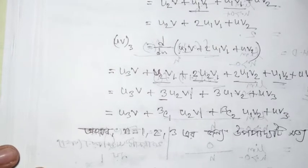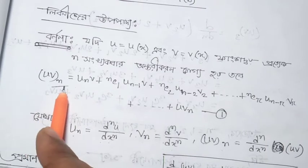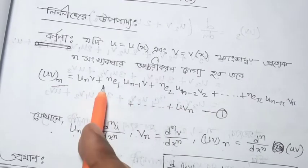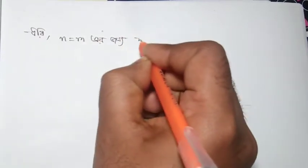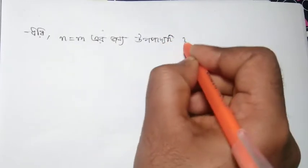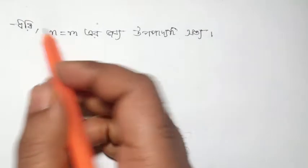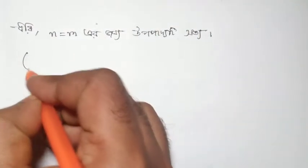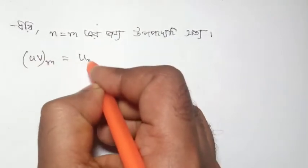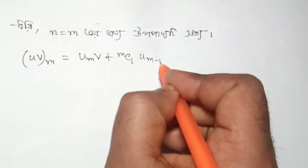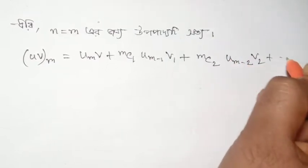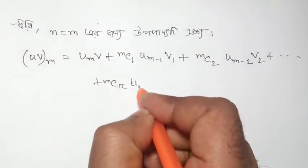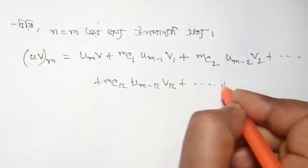Let us write down the general formula: UV_m equals U_m·V plus mC1·U_{m-1}·V_1 plus mC2·U_{m-2}·V_2 plus dot dot dot plus mCr·U_{m-r}·V_r plus dot dot dot plus U·V_m. This is the general Leibniz formula for order m.